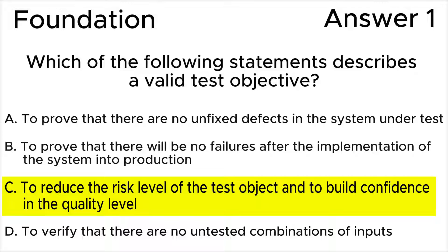Let's see why the rest of the answers are wrong. Answer A is wrong because it is impossible to prove that there are no defects anymore in the system under test. According to testing principle 1 in the syllabus, testing shows the presence, not the absence of defects. Testing can show that defects are present in the test object but cannot prove that there are no defects.